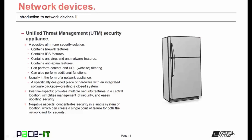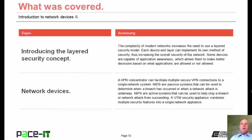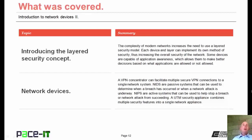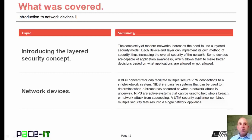The positive aspects of the UTM include that it provides multiple security features in a central location, which simplifies the management of security and eases updating. A negative aspect is that it can concentrate security into a single system or location, which can create a single point of failure for both the network and for security. That concludes this session on the introduction to network devices, part two.